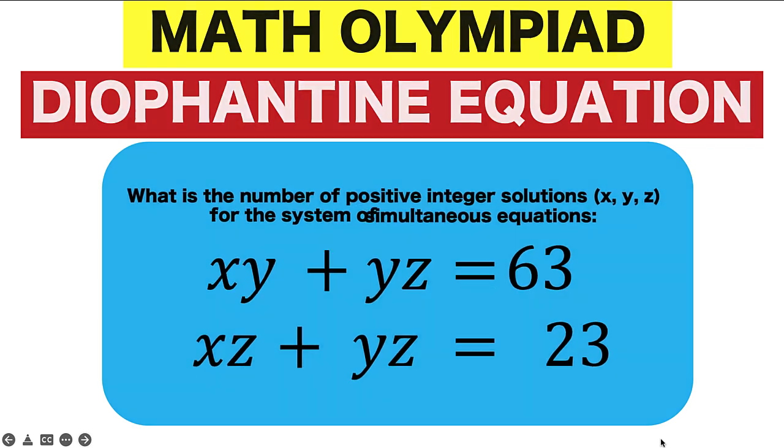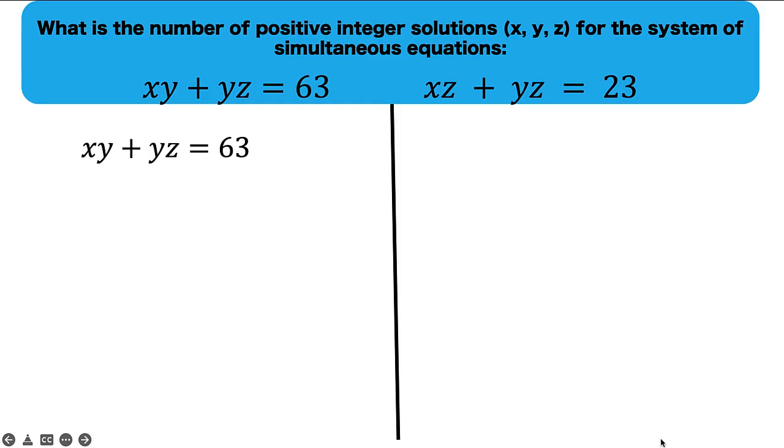Let's solve this problem together. Let's begin simplifying the first equation. Notice that we have here a common factor y, so let's factor out the variable y to arrive at this form. Let's go back to this form later on because there is nothing much that we can do with it.